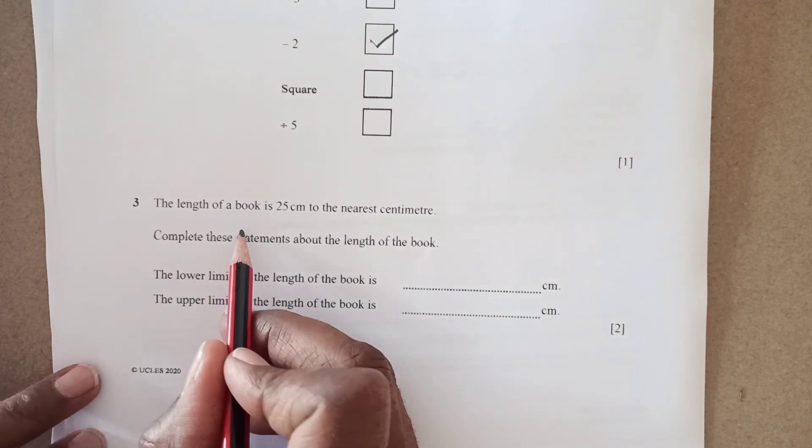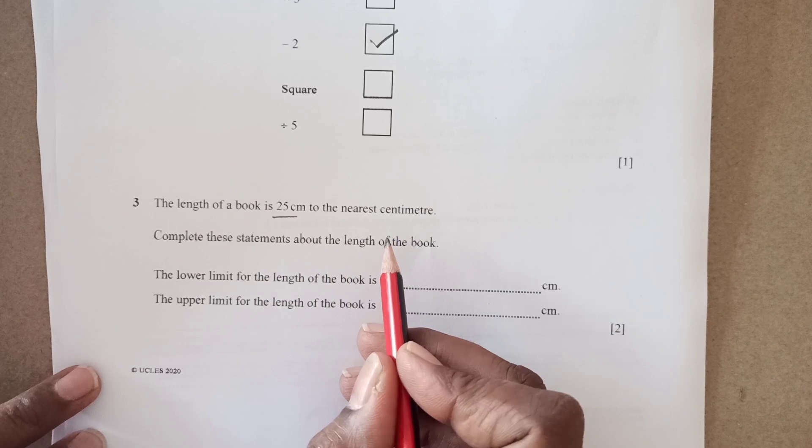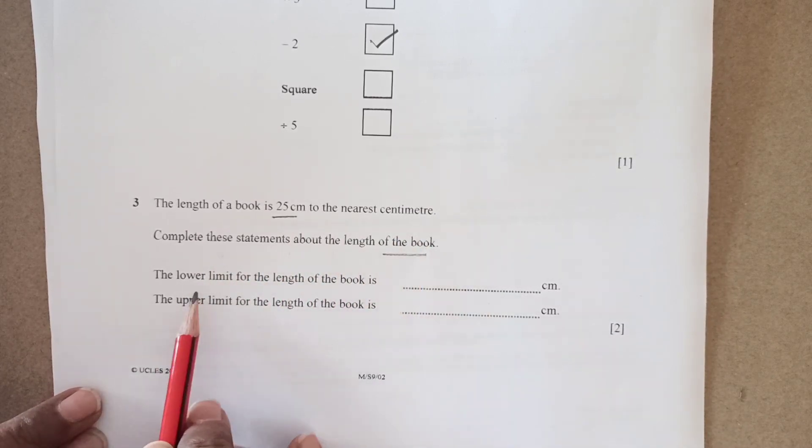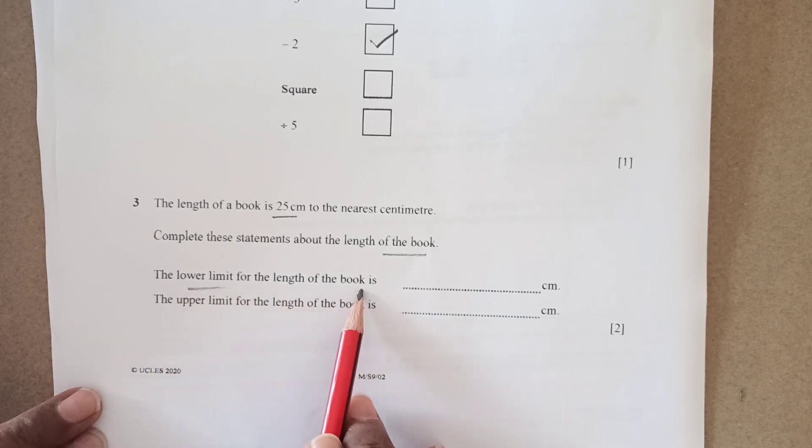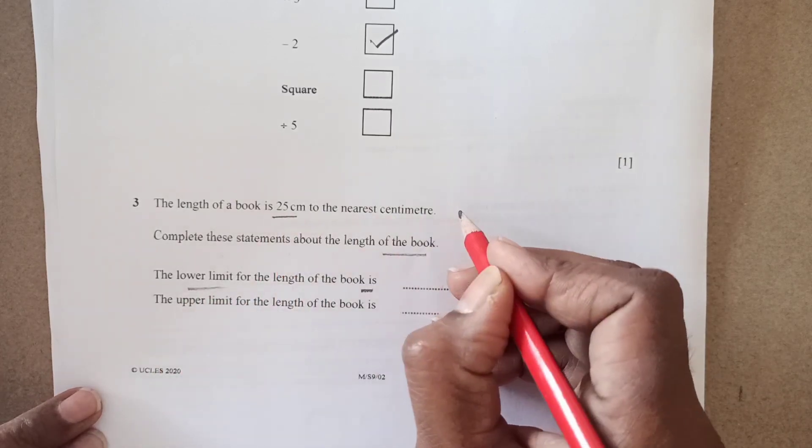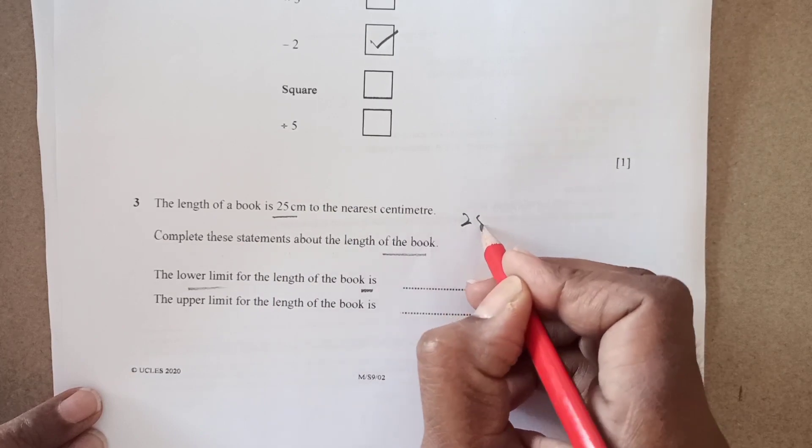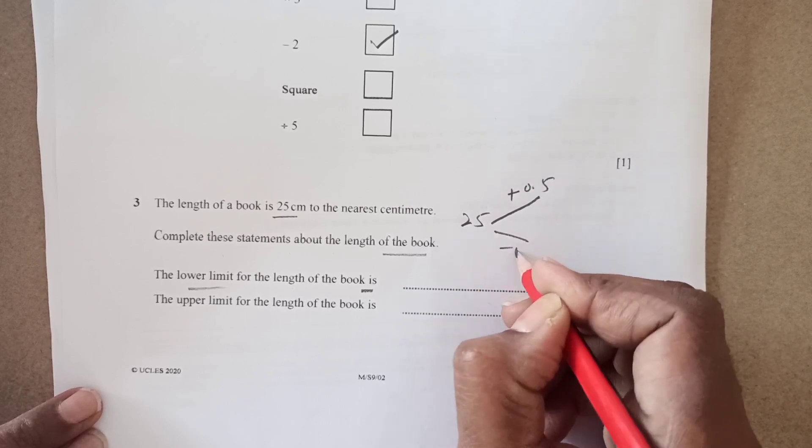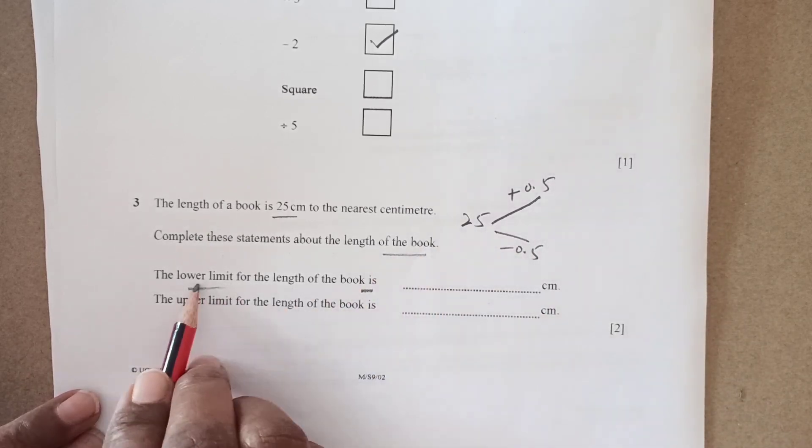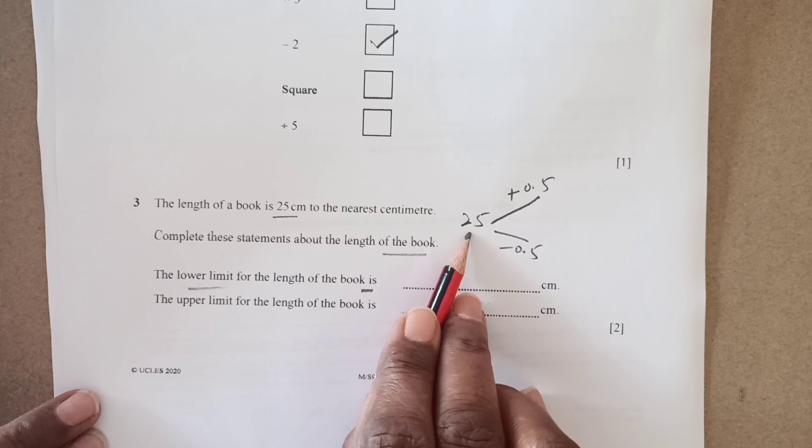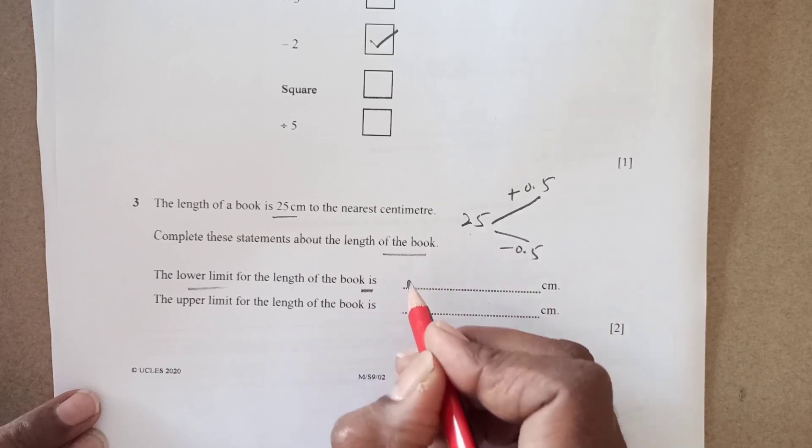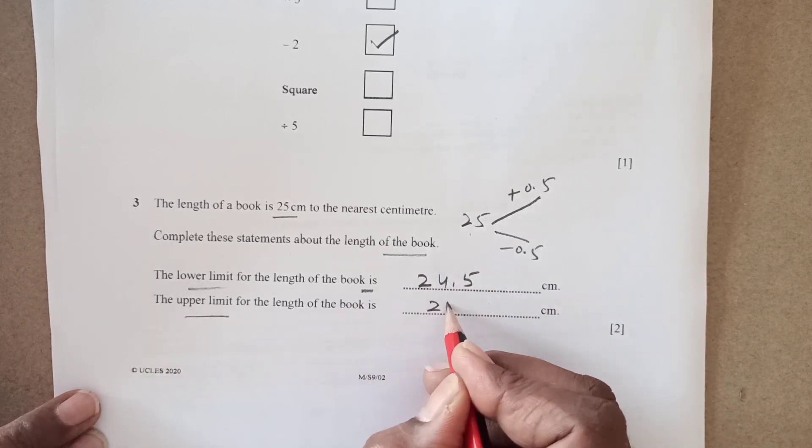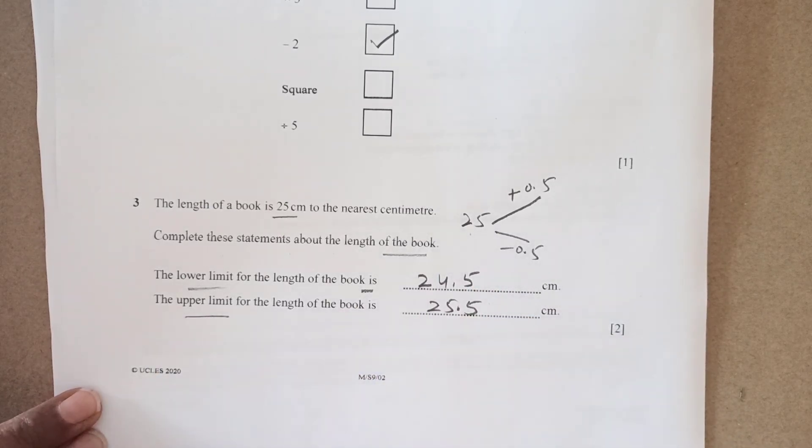Number 3 the length of the book is 25 centimeter to the nearest centimeter. Complete these statements about the length of the book. The lower limit of the length of the book is dash centimeters. It is 25. We are going to have 25 for the upper limit plus 0.5 and for the lower limit minus 0.5. The lower limit is going to be 24.5 and the upper limit is going to be 25.5 right.